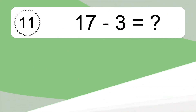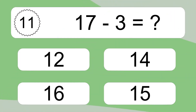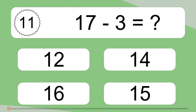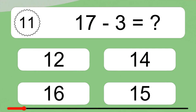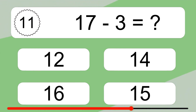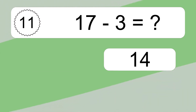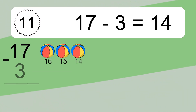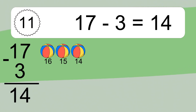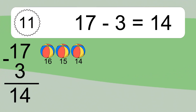17 minus 3 equals what? 17 minus 3 equals 14. Let's count it: 16, 15, 14.